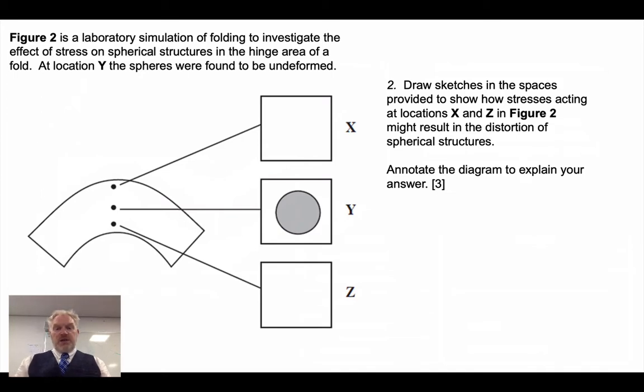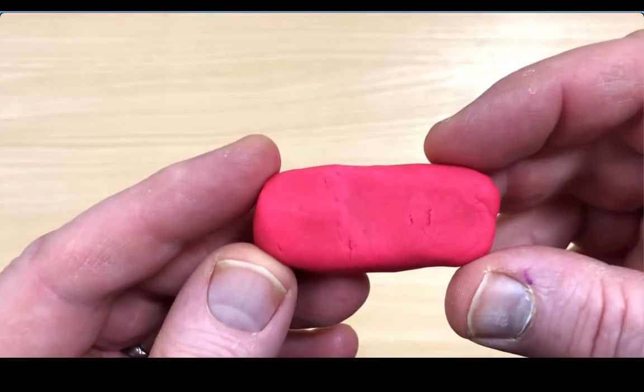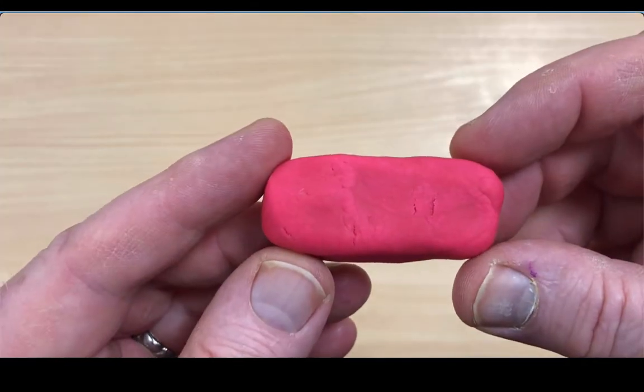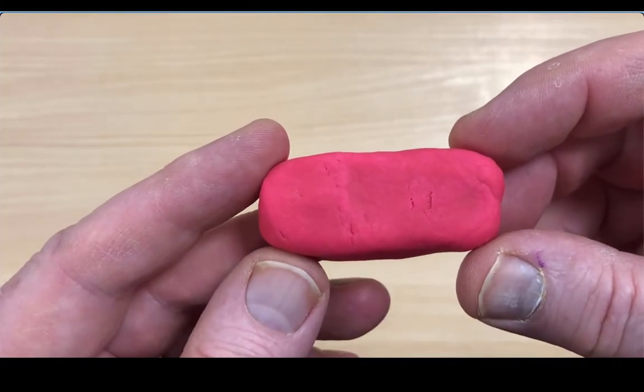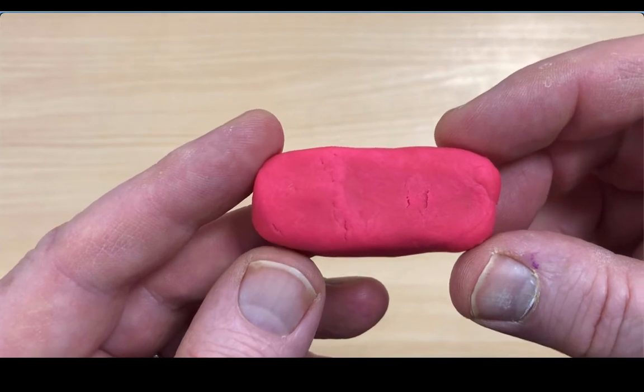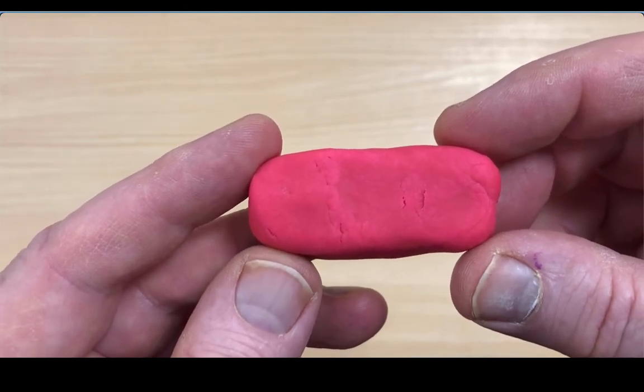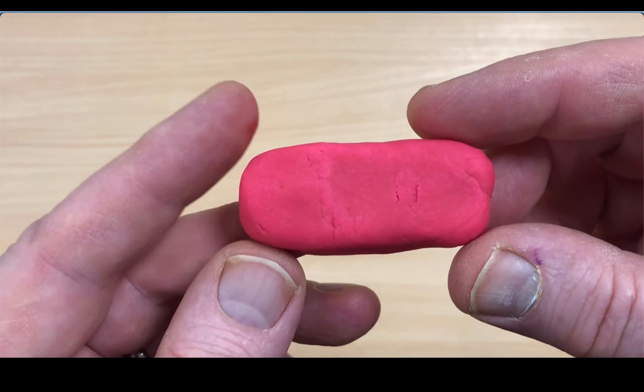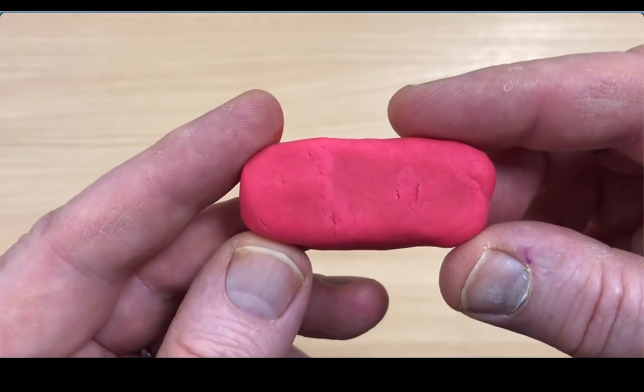Now to help understand this, let's see how we can model this using Play-Doh. If we use a piece of Play-Doh to model the behaviour of a bed that's been folded, we can see quite clearly how it will deform.